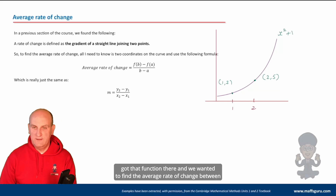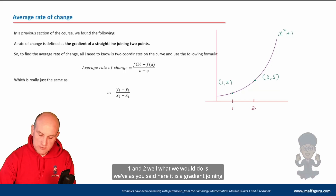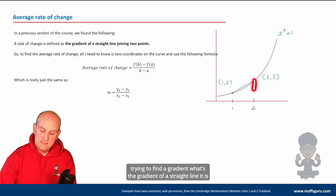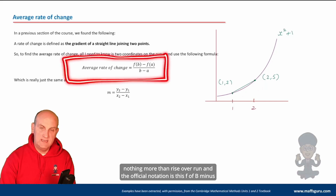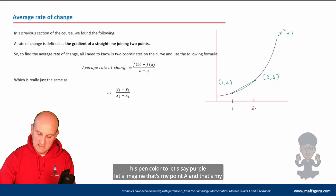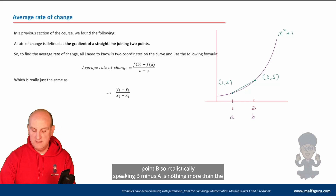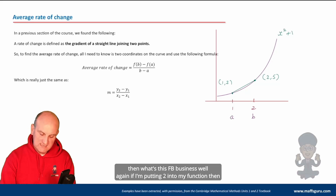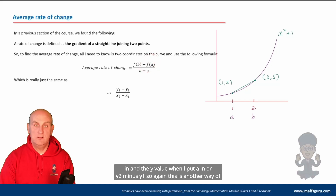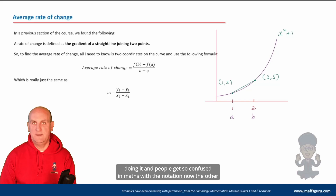Theoretically that would be the graph of x squared plus one. If we wanted to find the average rate of change between one and two, it is the gradient joining those two points. The gradient of a straight line is nothing more than rise over run, and the official notation is f(b) minus f(a) over b minus a. So b minus a is the difference in the run, and f(b) minus f(a) is y2 minus y1 — just another way of saying the same thing. People get so confused with the notation.